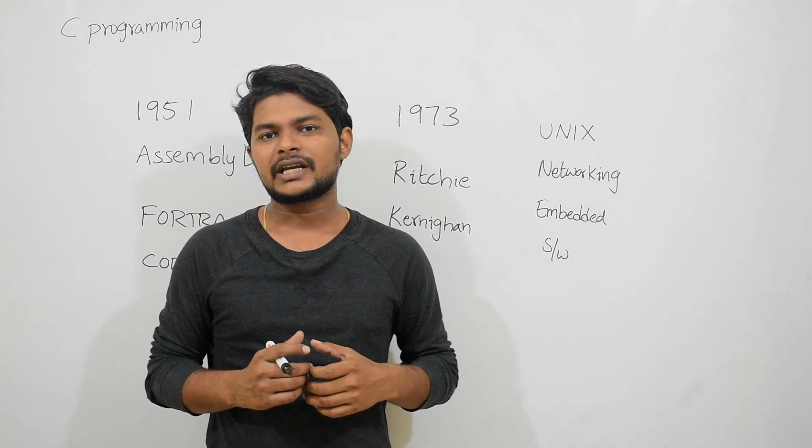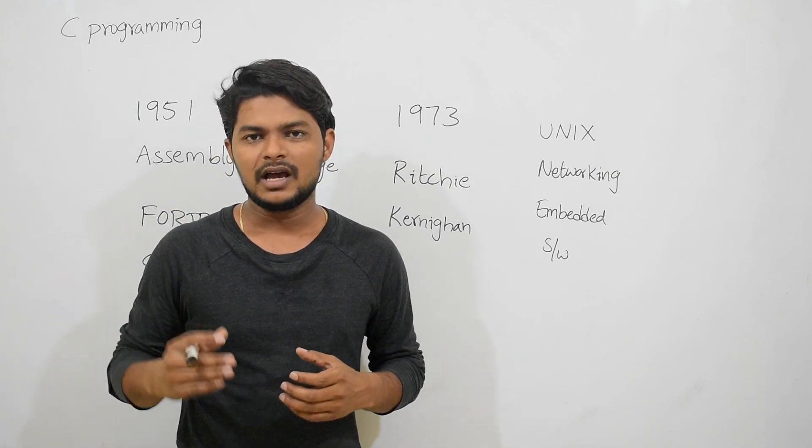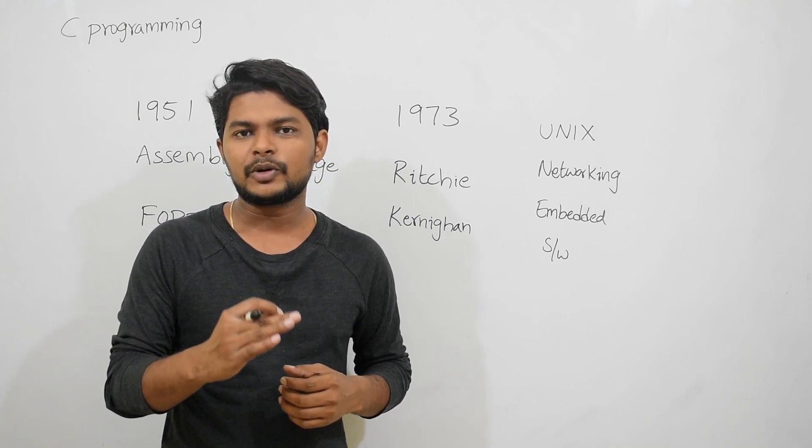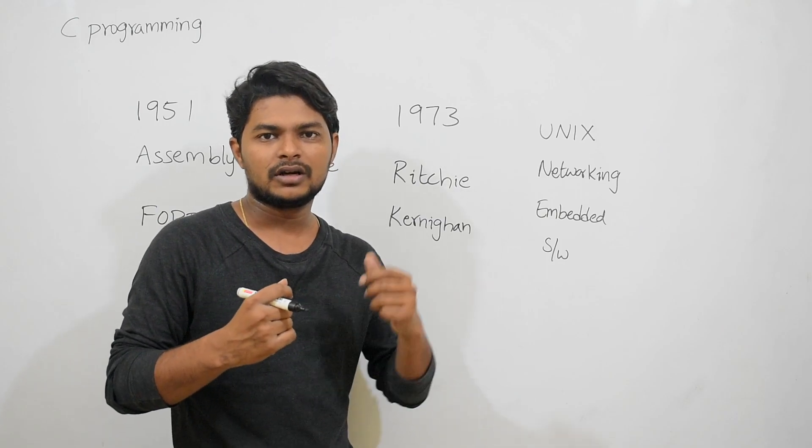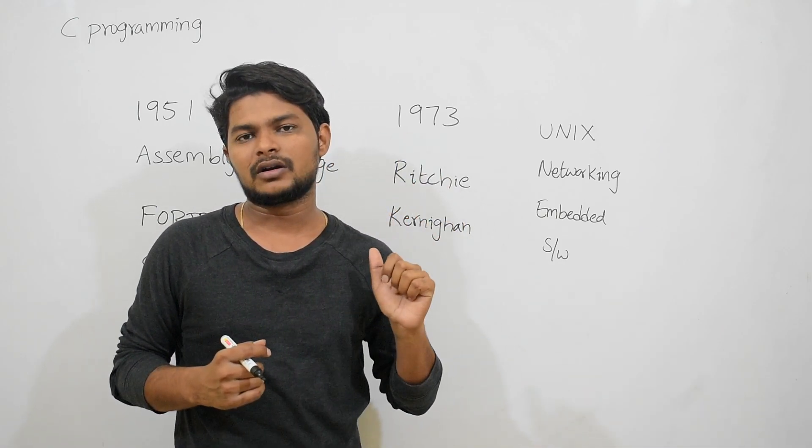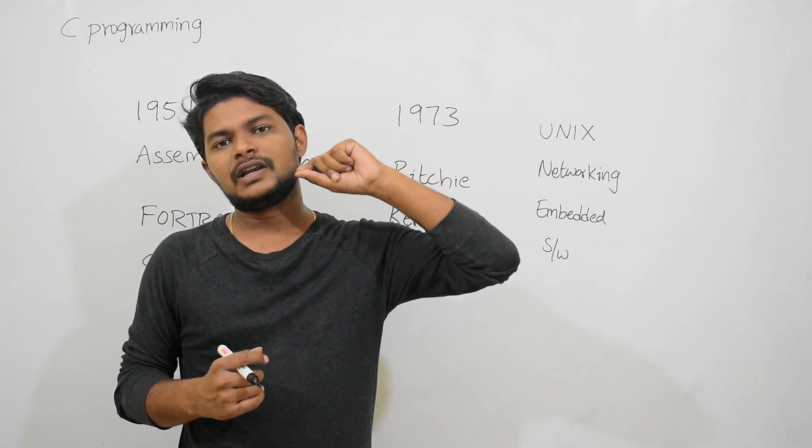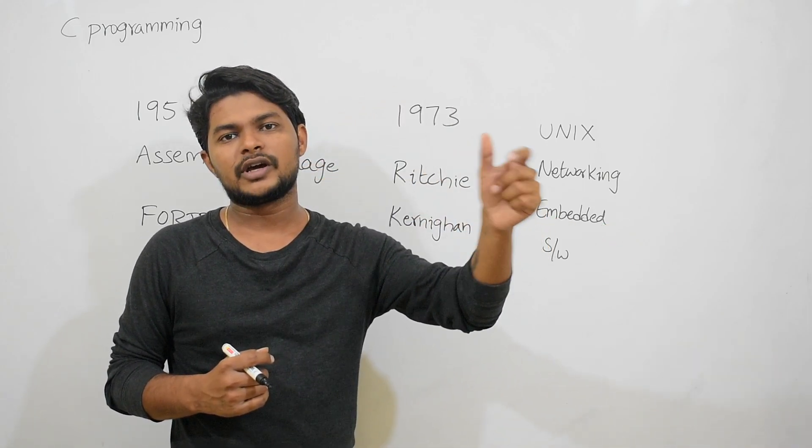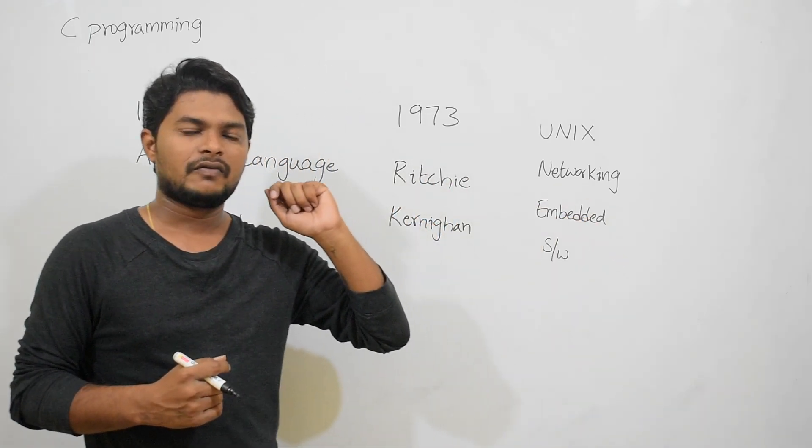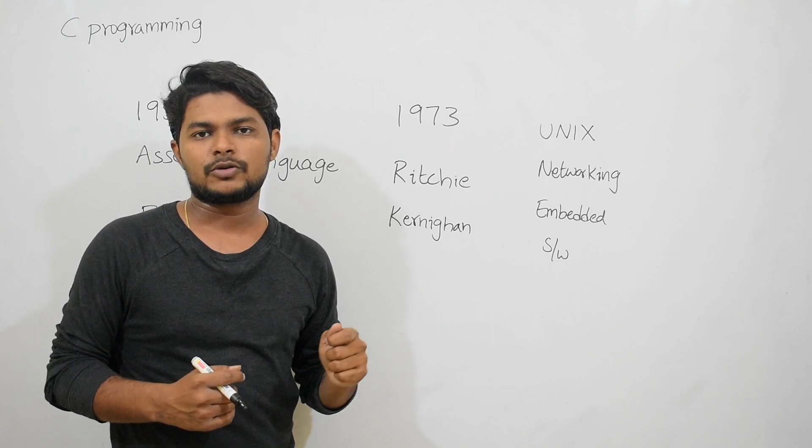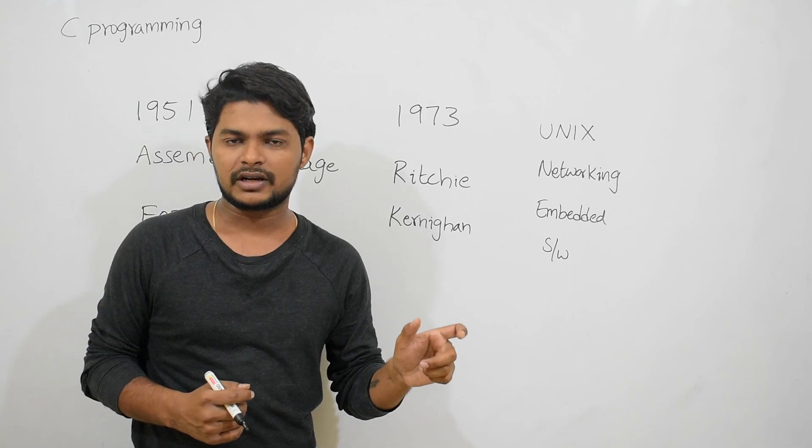We have been interacting with computers for many years. The purpose of interacting with a computer is to get things done. Suppose if we want to take a printout, we give ctrl-P, the print option, and that instruction executes the printer. Likewise, when we want to scan a document or browse the internet, we require a computer.